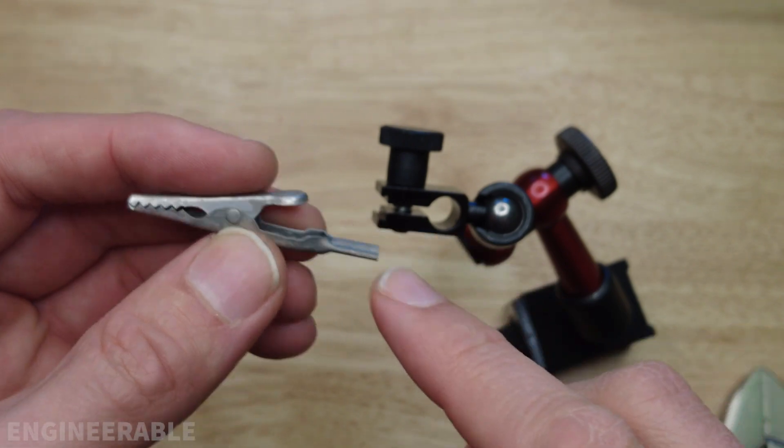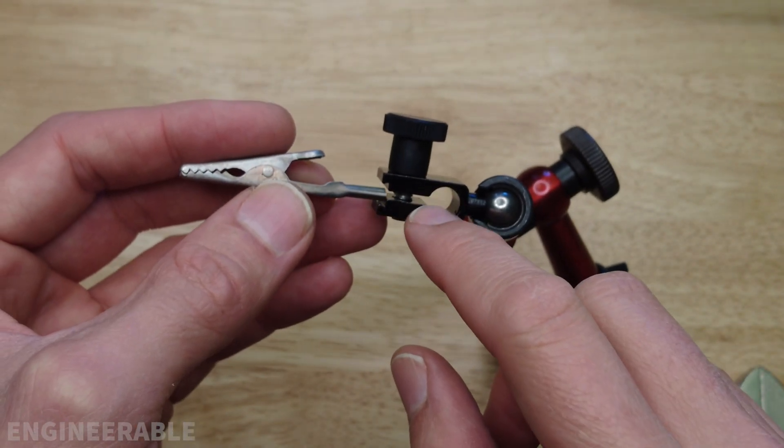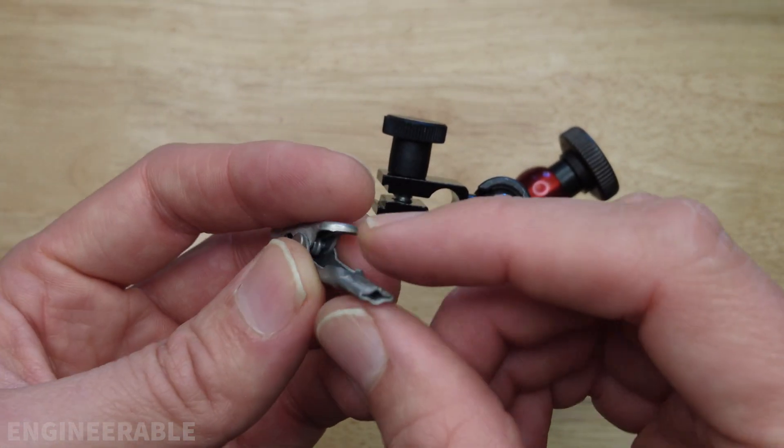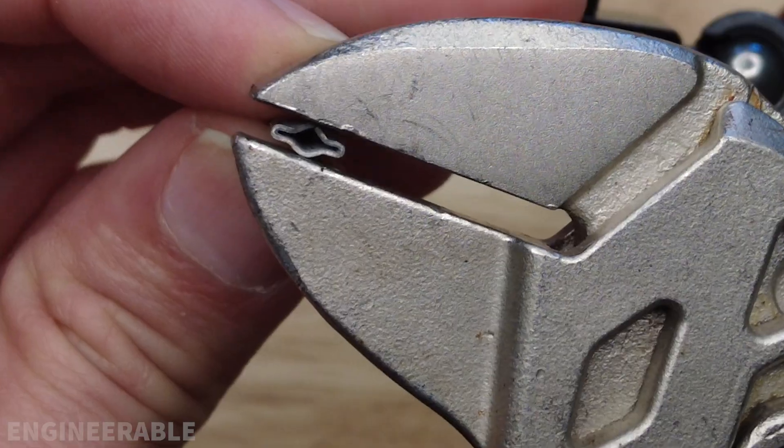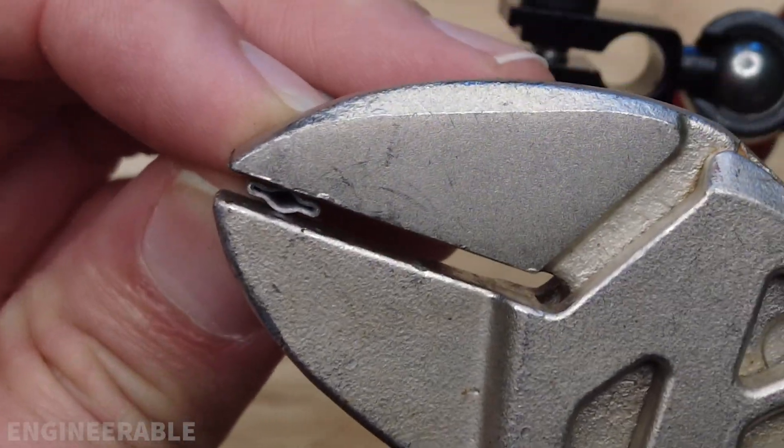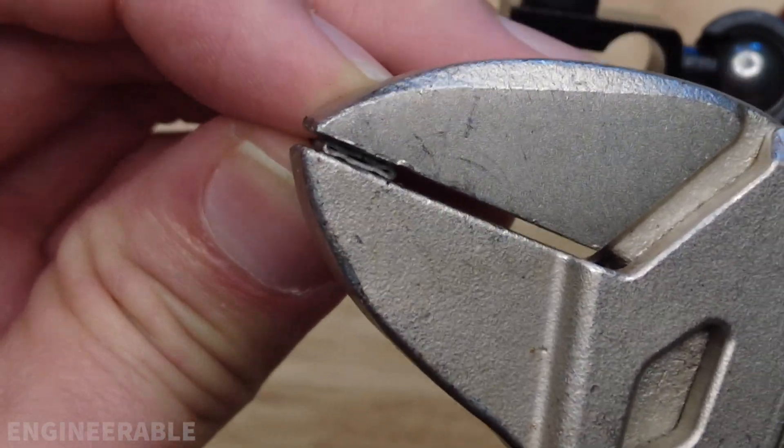The absolute simplest connection that can be made to this dial indicator holder is just to take some clips and crush the ends down. These are already partially crushed. I can crush them down even more like this. That's completely flat.